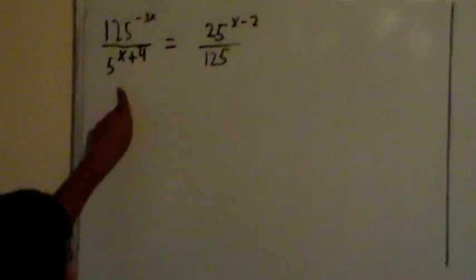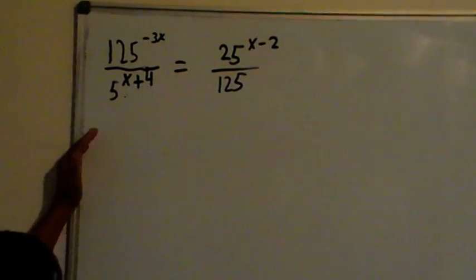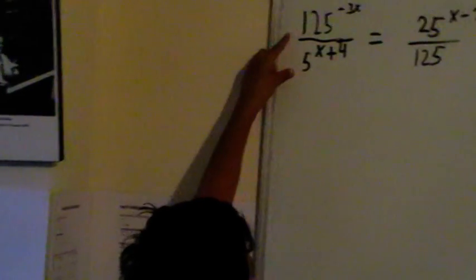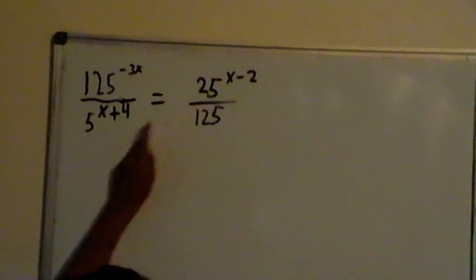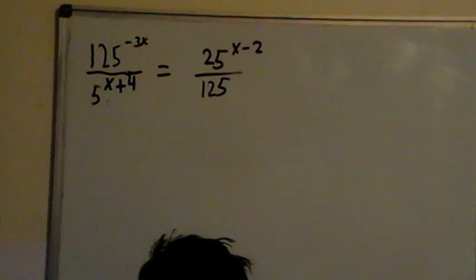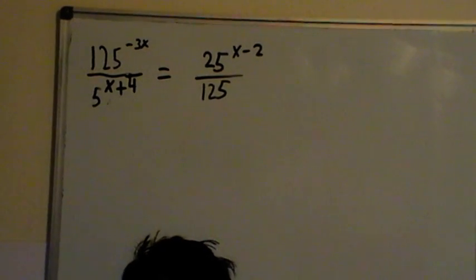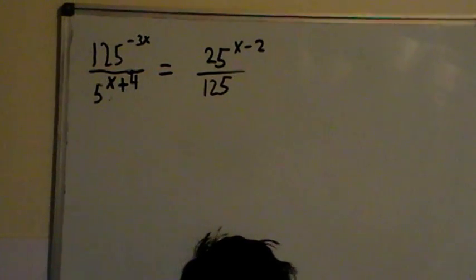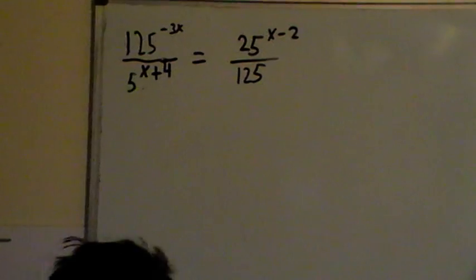Here is our equation. It's hard to actually solve it without making the bases the same. See, they're 125, 25, 5, and 125. So I'll solve it by using its HCF, highest common factor, so I can make all the bases the same.